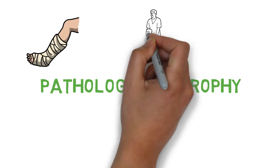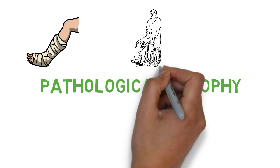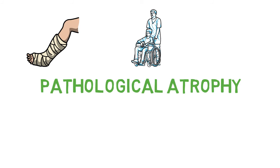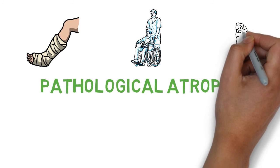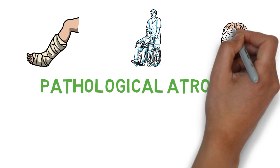Denervation atrophy due to damage to nerves supplying the skeletal muscles. Again these skeletal muscles will undergo atrophy. Atrophy due to diminished blood supply, for example brain in old age due to atherosclerosis of arteries supplying it.